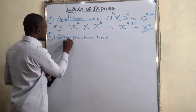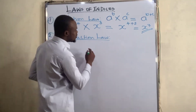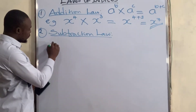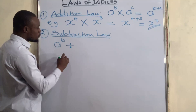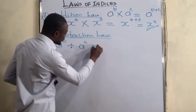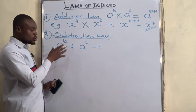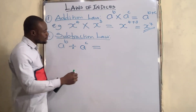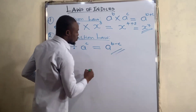The second law is the subtraction law. This law states that when you have a to the power of b divided by a to the power of c, you pick one of the bases and subtract the powers instead of adding them. So you get a to the power of b minus c.